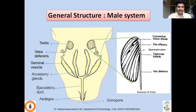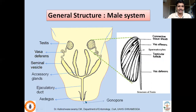The vas deferens has a connection to one or more pairs of accessory glands. These accessory glands mainly produce seminal fluid which nourishes the sperms. In many insects they also produce the spermatophore, where sperms are encased in a protein encasement through which the spermatophore is transferred to the female reproductive tract. The vas deferens and secretions of the accessory glands move through the common ejaculatory duct into the aedeagus, the male external genitalia, which transmits sperms to the female.